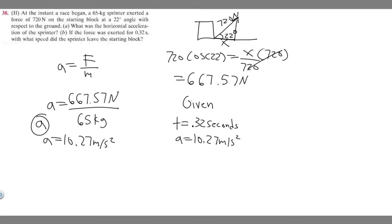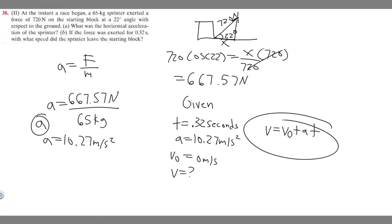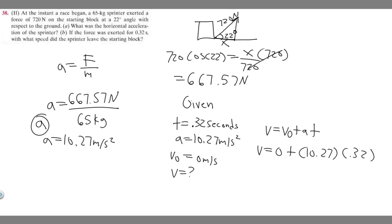The sprinter starts from rest, so V₀ equals 0 meters per second. He goes from rest, and 0.32 seconds later he leaves the starting block at some speed V, which is what we're solving for. Using kinematics, the equation is V equals V₀ plus A times T. So V equals 0 plus 10.27 times 0.32.